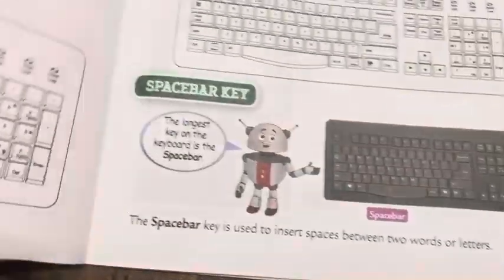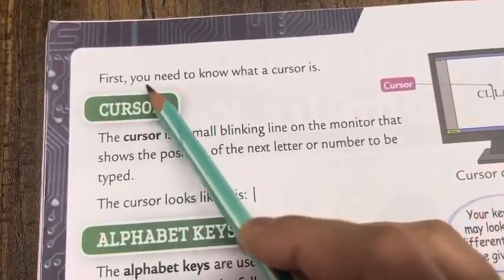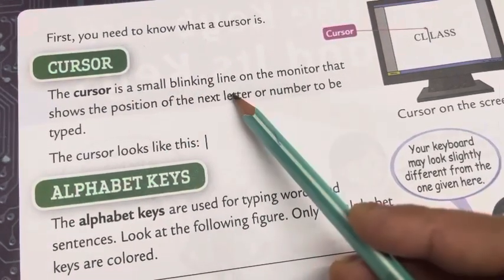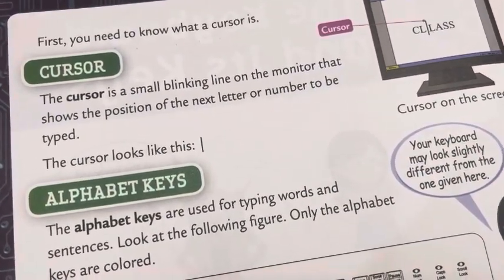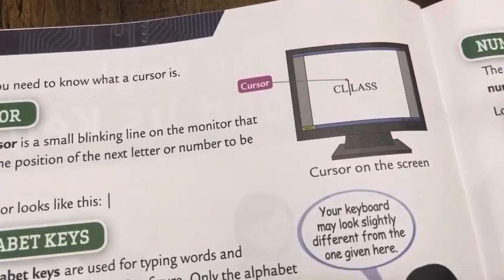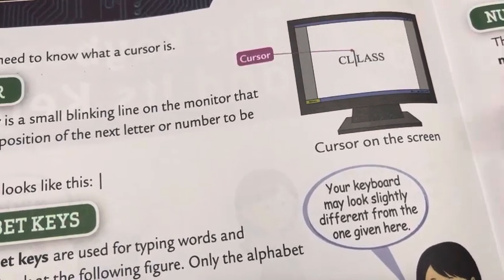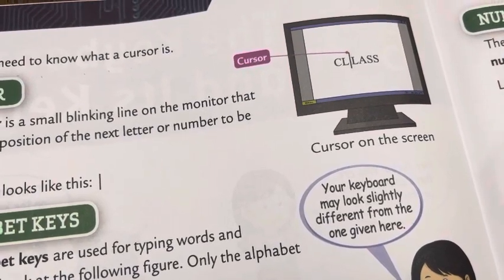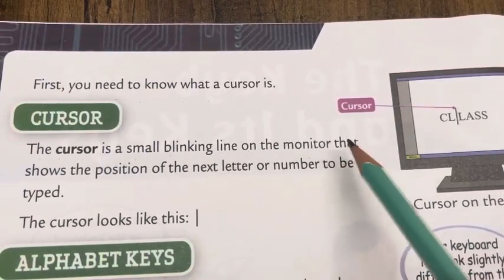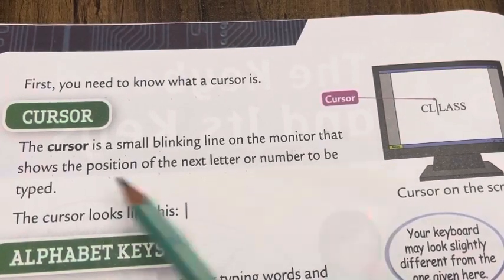Pick out page number 58. First, you need to know what a cursor is. We will learn about the cursor. This is a cursor — this straight blinking line on the monitor. The cursor is a small blinking line on the monitor that shows the position of the next letter or number to be typed.